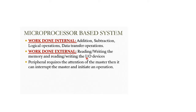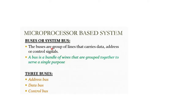Typing on a keyboard is an external operation — reading and writing by input devices are all external. The microprocessor is the master, and other devices are slave devices. A sensor is a slave device. The master does manipulations and gives instructions to or receives information from the slaves. A bus is a bundle of wires grouped together to serve a single purpose.